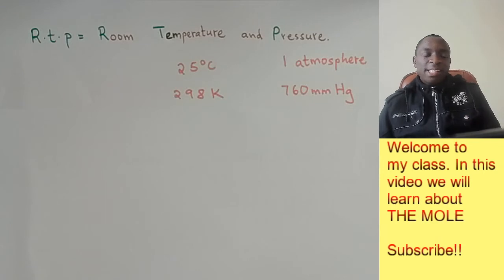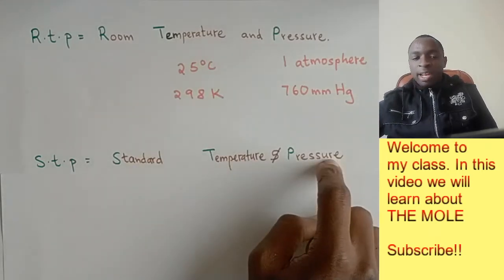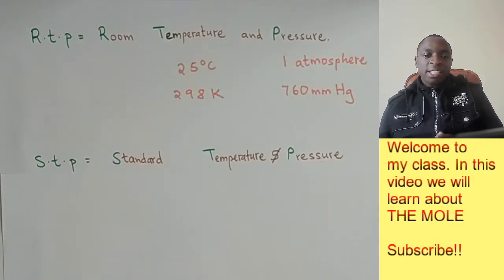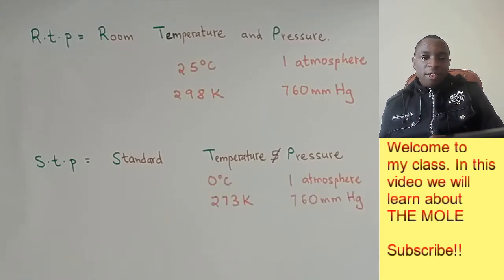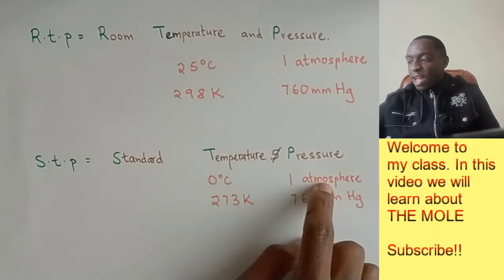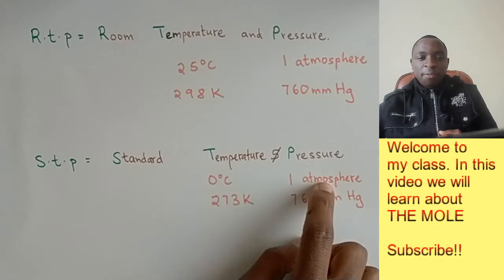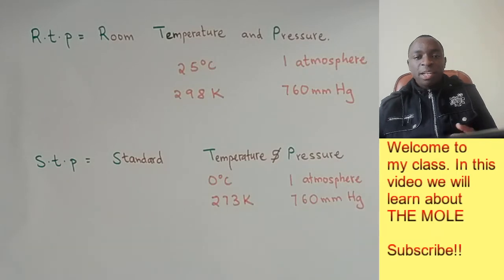The next one is the standard temperature and pressure, which is abbreviated as STP. Now the standard temperature and pressure is very similar to RTP but there is a slight difference. The pressure remains constant but the temperature changes. That's why you say it is standard temperature. Now the standard temperature and pressure is 0 degrees Celsius and 1 atmosphere and 273 Kelvin and 760 millimeters mercury.